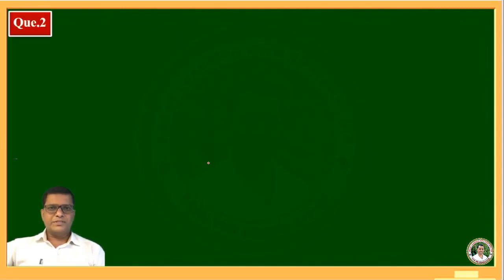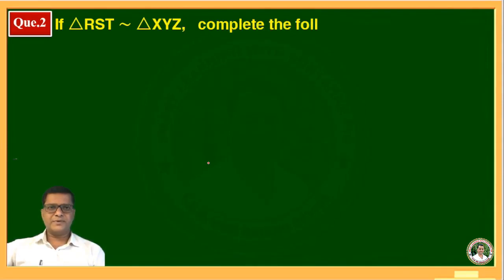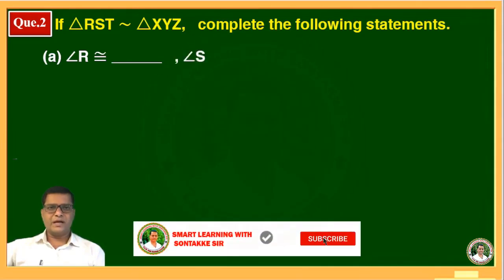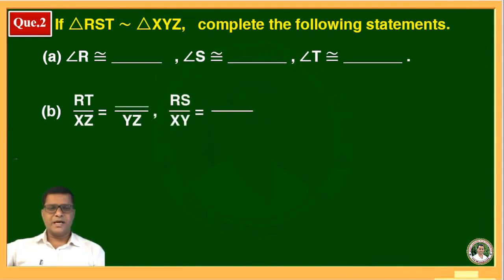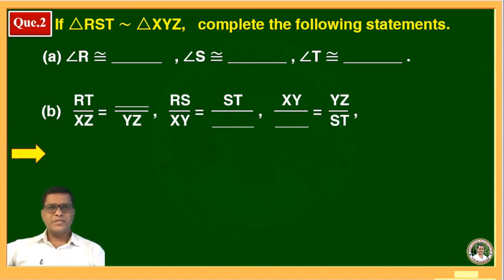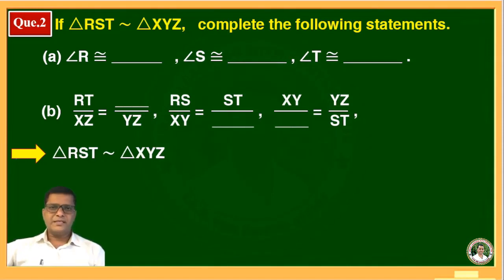The second question of this exercise: if triangle RST is similar to triangle XYZ, complete the following statements. Statement A: angle R is congruent to dash, angle S is congruent to dash, and angle T is congruent to dash. Statement B involves ratios of corresponding sides. We know that if two triangles are similar, then corresponding angles are congruent and corresponding sides are in proportion.